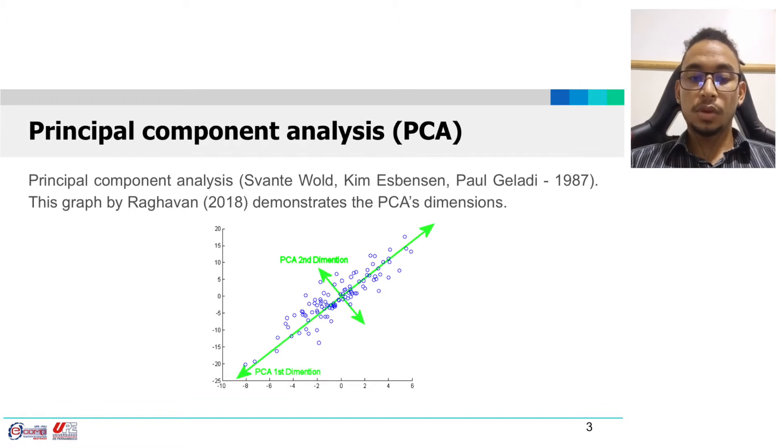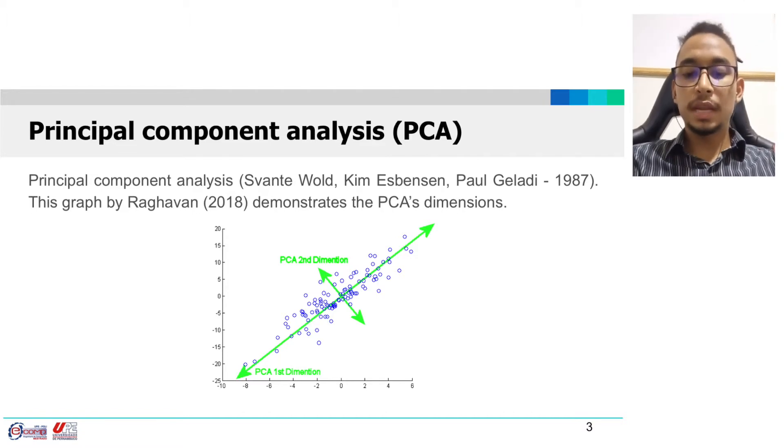It's common to solve this problem by reducing the dimensionality of the data. One of the most famous works for this task is PCA. Principal component analysis is the process of computing the principal components and using them to perform a change of basis on the data.